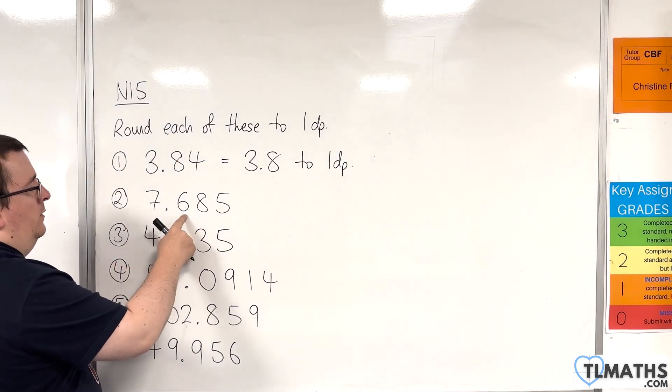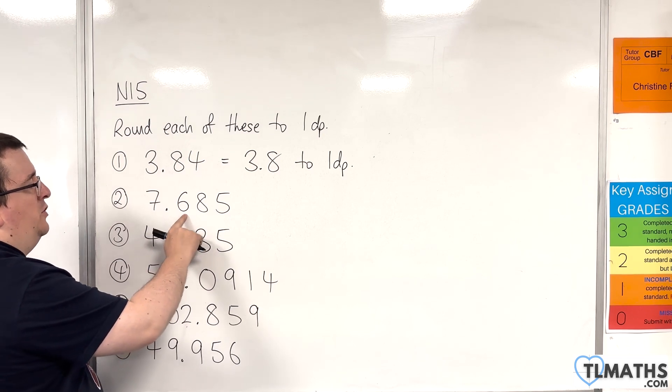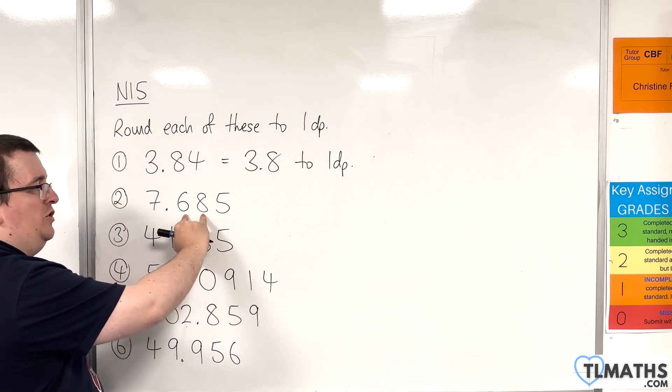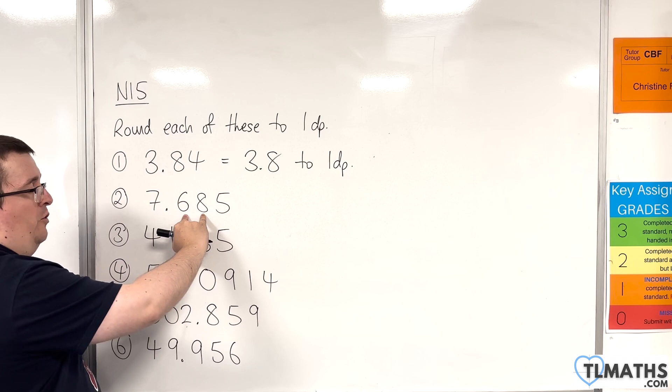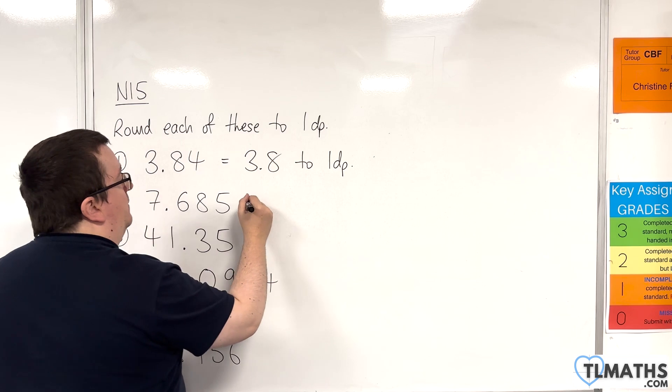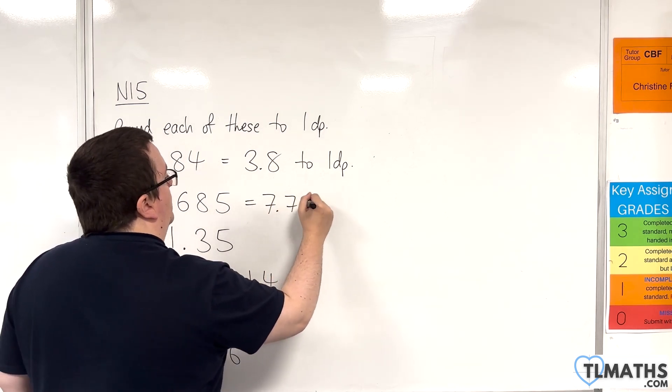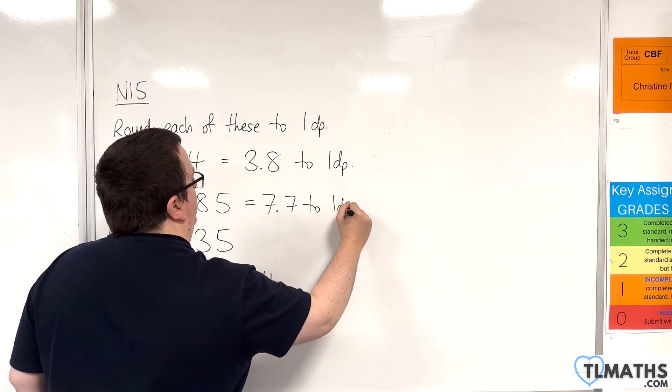7.685, look at the first decimal place. To the right is 8, which is more than 5, which is 5 or more, I should say. So, we round it up. So, that would round up to 7.7. 7.7 to one decimal place.